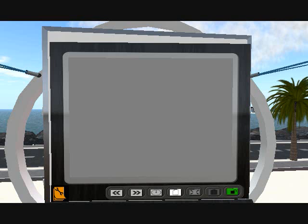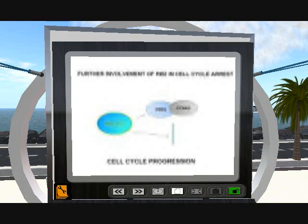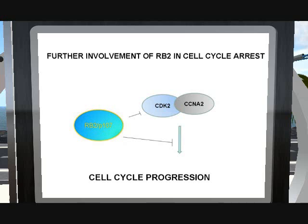I would like to talk about a recent discovery made in the laboratories directed by Professor Antonio Giordano in Philadelphia. It has been found that RB2 and P107 not only control the cell cycle by binding E2F factors, but also by binding directly CDK2. CDK2 coupled with cyclin A2 has a pivotal role in the progression of the cell cycle, so blocking CDK2 activity produces a block of cell cycle progression.